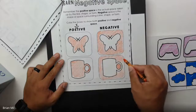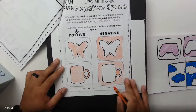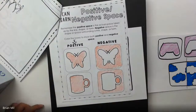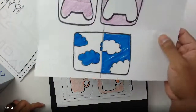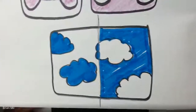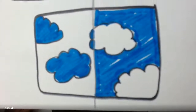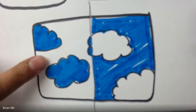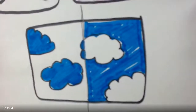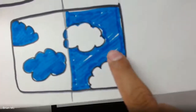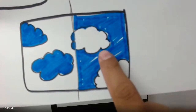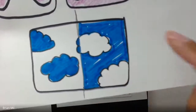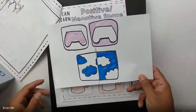I also showed the last class an example using clouds. I'll hold it up to the camera — notice how one side is the positive, which is the colored-in clouds, and then I colored in the negative space, which is the outside of the clouds — I colored in the sky. That's another great example of positive and negative space.